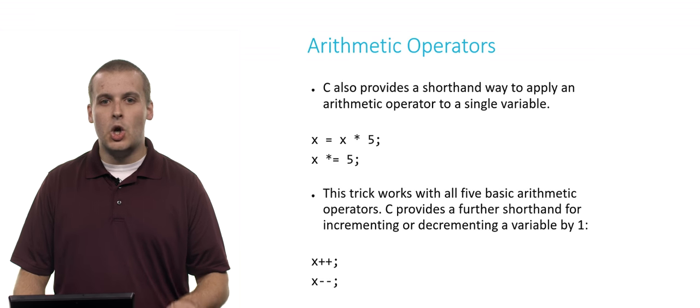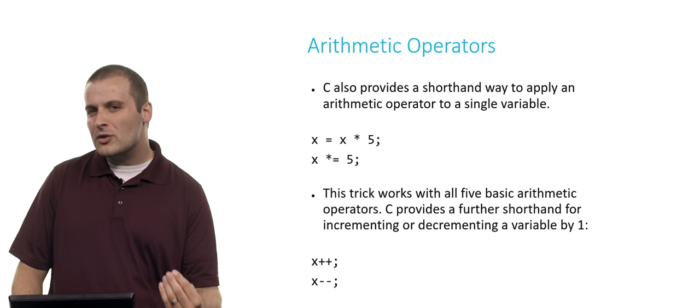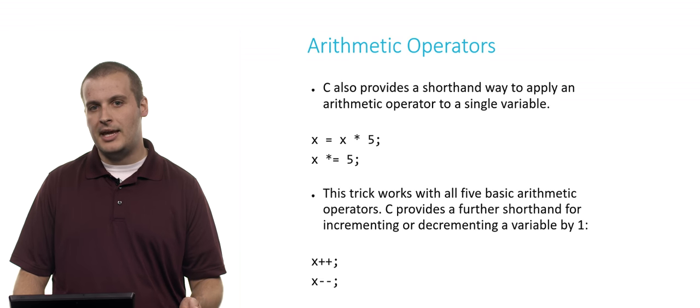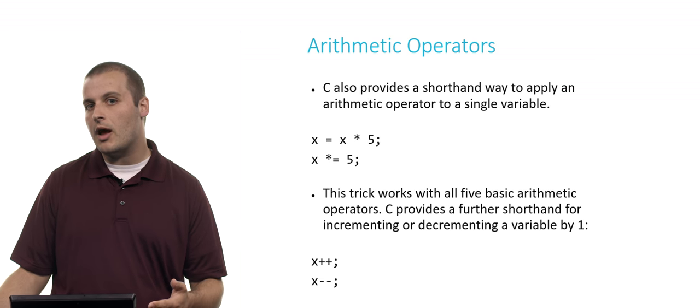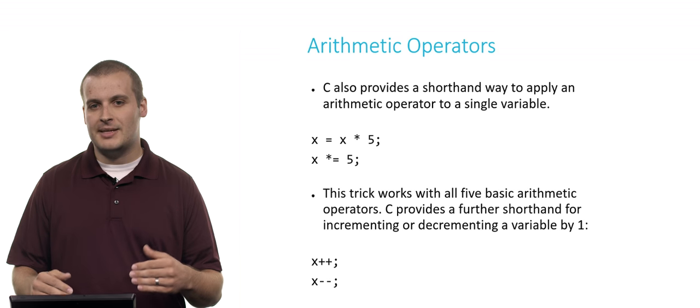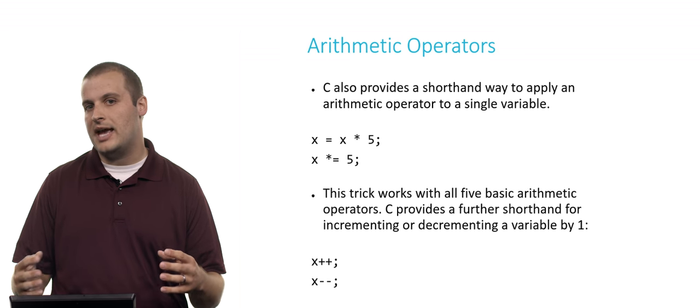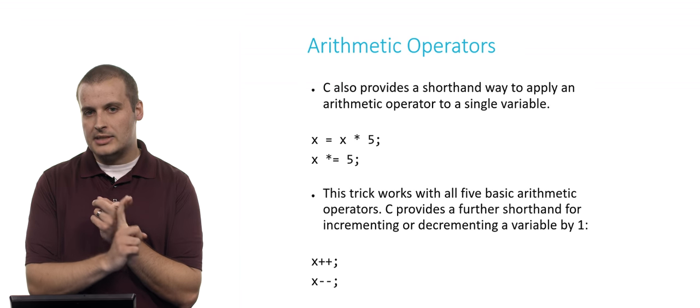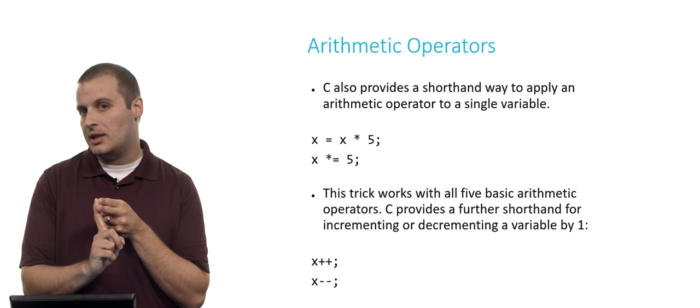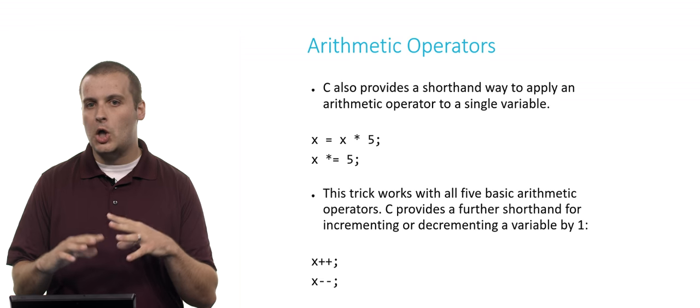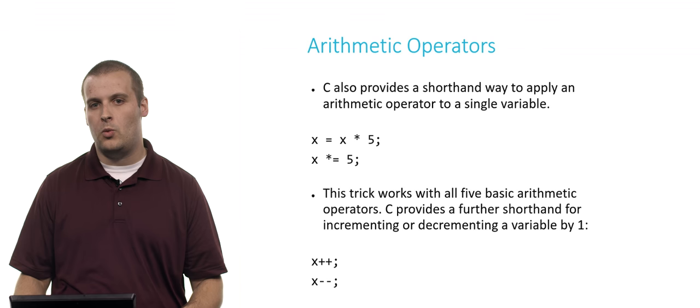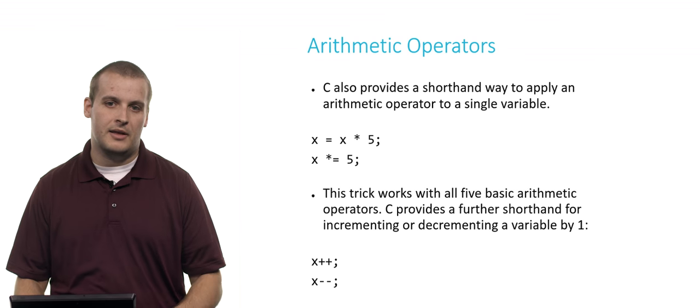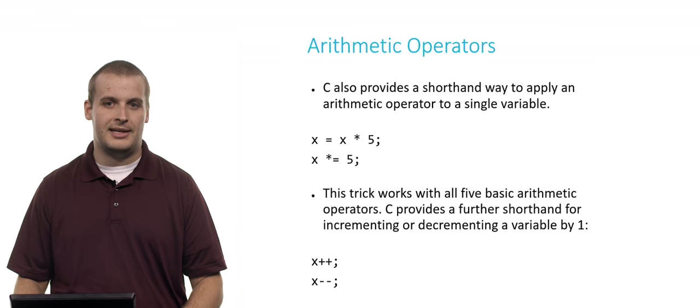There's also something that's so common in C that we've decided to refine that even further. Incrementing a variable by 1 or decrementing a variable by 1 is such a common thing, especially when we talk about loops a little later on, that we've decided that instead of saying something like x plus equals 1 or x equals x plus 1, we've even shorthanded that to x plus plus. So x equals x plus 1, x plus equals 1 and x plus plus all do the same thing. That incrementing and decrementing by 1 is so common that we have plus plus and minus minus that allow us to shorthand that even further.